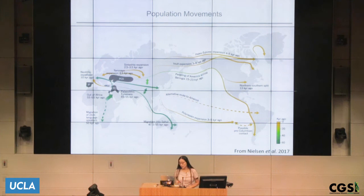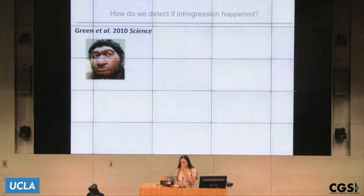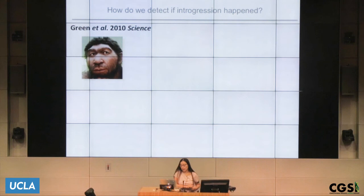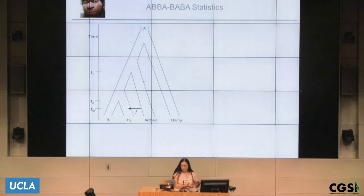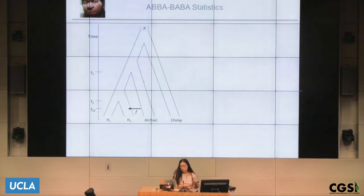Now I want to talk about how we detect introgression. In the first paper where the first draft of the Neanderthal genome was published, one of the tools used are ABBA-BABA statistics. The idea is that if you have a tree that explains the evolutionary relationship of four populations — two human populations H1 and H2, an archaic population, and an outgroup which is the chimp — the human populations H1 and H2 are more closely related than the archaic population is to any one human population.